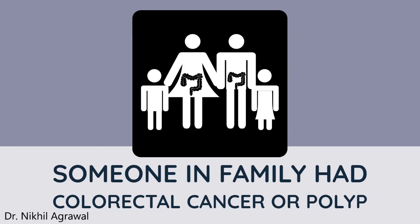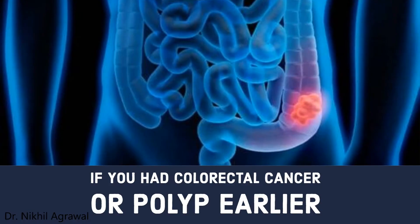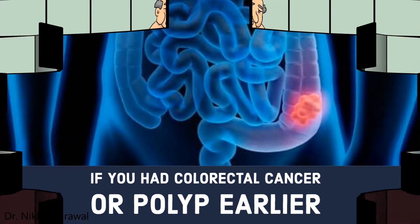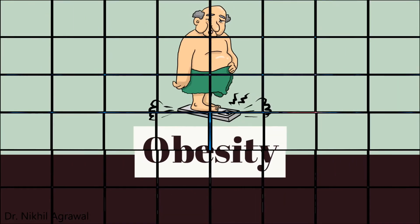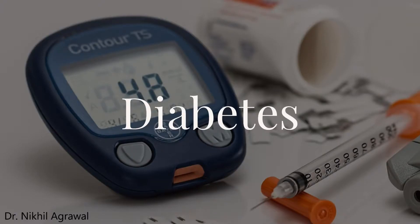Some gene mutations run in families and increase the risk. The most common of such syndromes are familial adenomatous polyposis coli and hereditary non-polyposis colorectal cancer. Someone who had colorectal cancer or a polyp previously is also at increased risk. Other risk factors include obesity and diabetes.